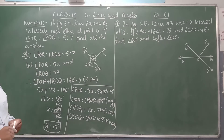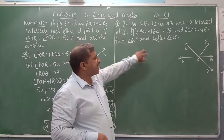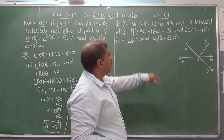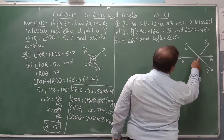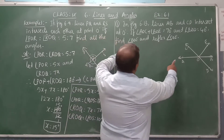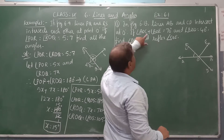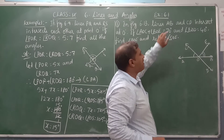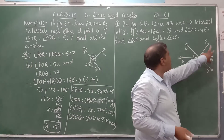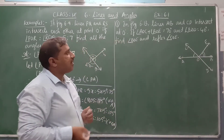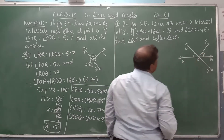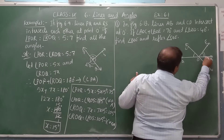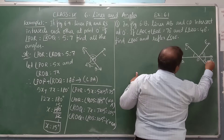Now we will move to Exercise 6.1, Question 1. In figure 6.13, lines AB and CD intersect at O. It is given that angle AOC plus angle BOE equals 70 degrees — we don't know individually how much each is. And angle BOD equals 40 degrees. Find angle BOE and the reflex of angle COE.